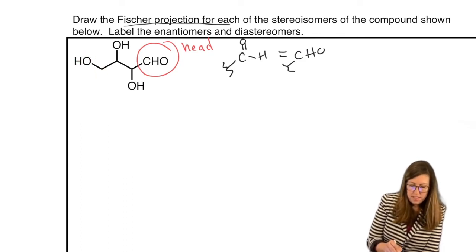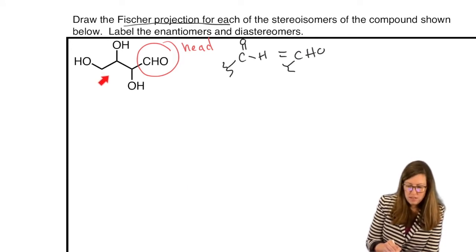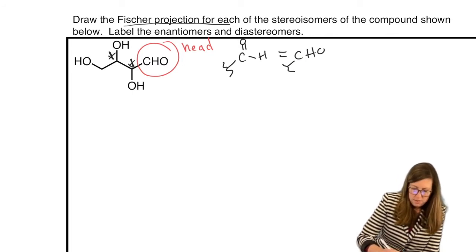So I'm going to call that CH2OH. It does not get its own line. I'd be wrong in a Fischer projection. So there's only two lines because there's two stereocenters. So this is not a stereocenter, so there's no special line for it.